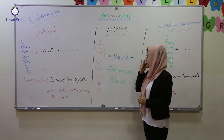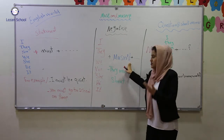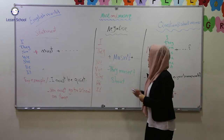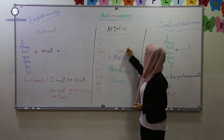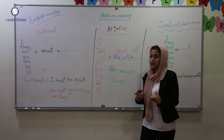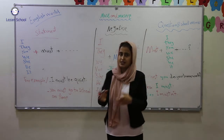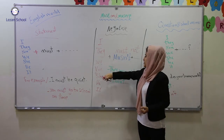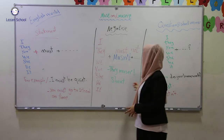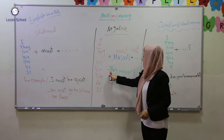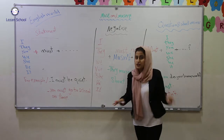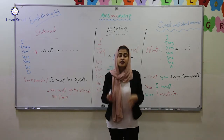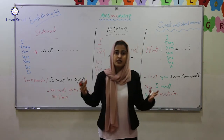The negative form is mustn't. It is very easy — we just add 'not' to must: mustn't, which is 'must not'. But generally in speaking, we use the contracted form together: she mustn't, he mustn't, I mustn't. This is the shortened form. For example: they mustn't shout. While you are in class or in a restaurant, you mustn't shout.